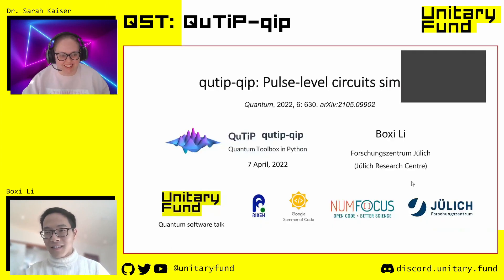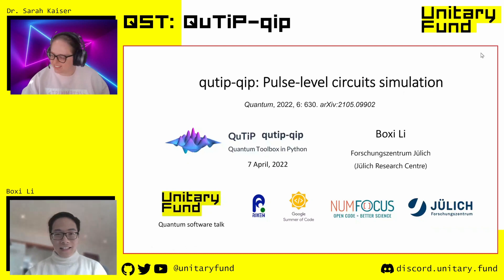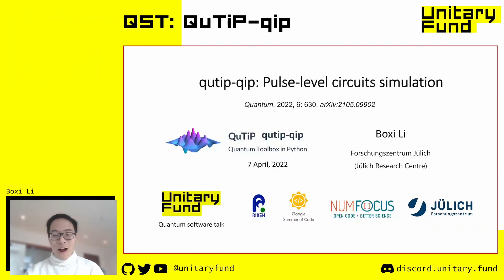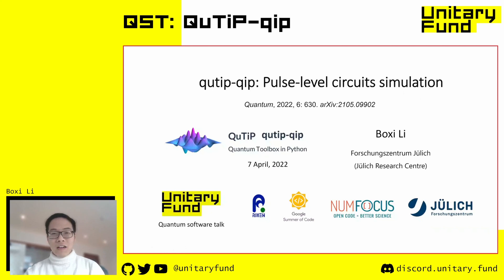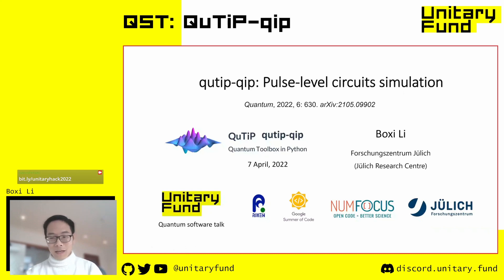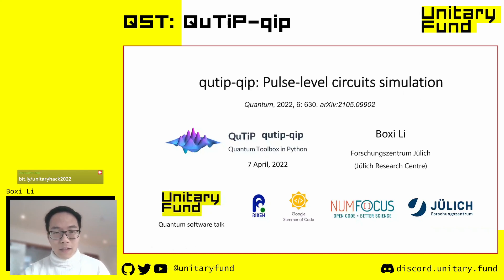Pulse-level simulation may be a new term. It means that instead of simulating circuits at the gate level—where a unitary is multiplied with some state vector—we actually simulate circuits at the physics level. Let me first give a brief introduction to QuTiP.